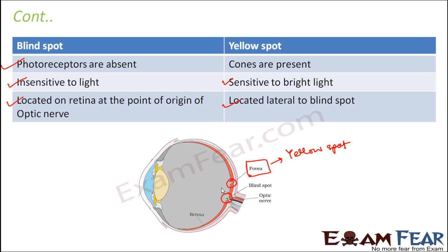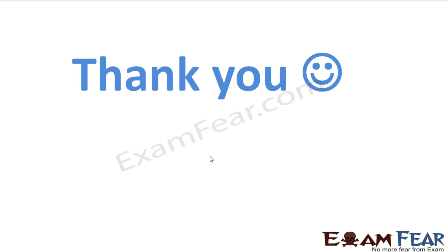With this, we have reached the end of this lesson. I hope this lesson on neural control and coordination has helped you. Our discussion on control and coordination is not yet complete — we will carry on with the endocrine system in the next lesson. See you all in the next lesson. Thank you.